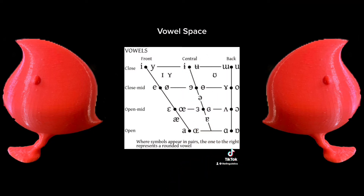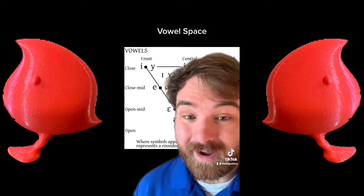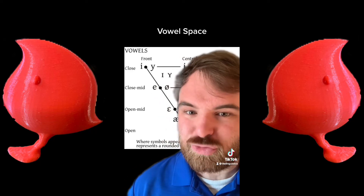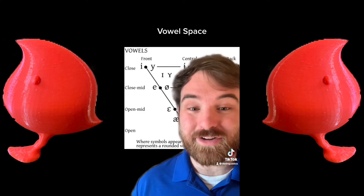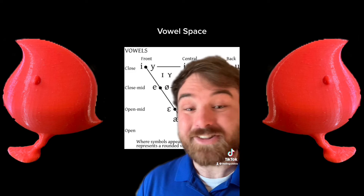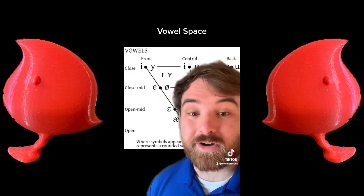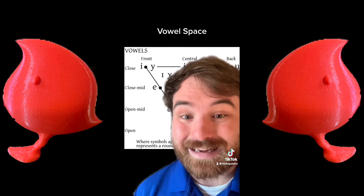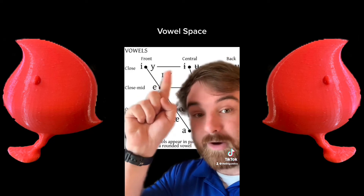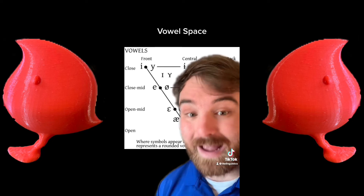Here is a map of vowel space. Vowels are defined as having a nearly unrestricted airflow compared to consonants, which restrict the airflow. Since there's no real restriction, the sound of the vowel is determined by the shape of your mouth when it's being made. Any little nuance in your mouth can make a completely different vowel. This chart arranges vowels based on the location of your tongue, which determines the shape of your mouth. It goes front to back and high to low.